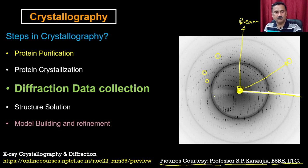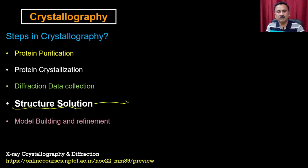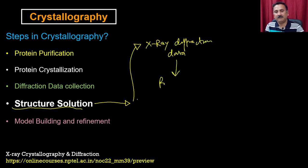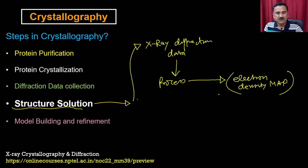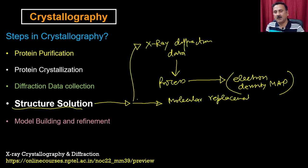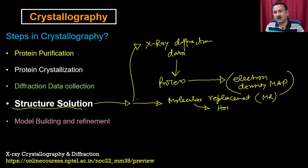Now the second step is going to be the structure solution. In the structure solution, you are going to have the X-ray diffraction data. This diffraction data is going to be processed and ultimately it is actually going to allow you to generate the electron density map. There are many methods or approaches you can use for structure solutions. You can use molecular replacement or MR. The molecular replacement approach is only for protein if you are solving a protein which is homologous to an existing protein in the protein structure database. So this is actually for homologous proteins.